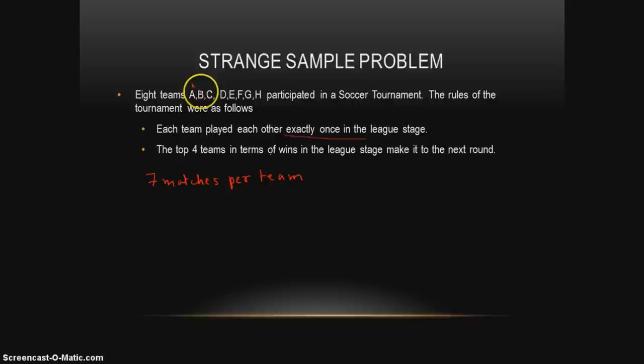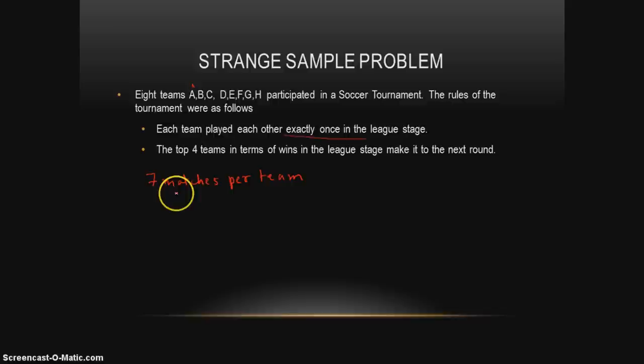It's 7 matches per team because A is playing 1 against B, 1 against C, 1 against D, 1 against E, 1 against F, 1 against G, 1 against H — that makes 7 matches for A. Next, the top 4 teams in terms of wins in the league stage make it to the next round. So if every team plays 7 matches, it would have won and lost certain matches, and the top 4 teams by wins qualify to the next round.